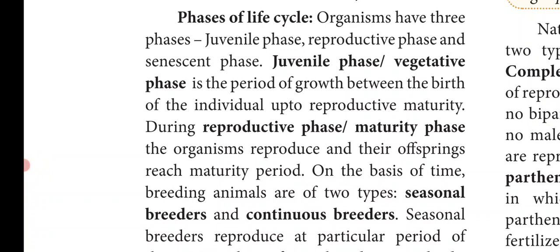In animals, the juvenile phase is the period of growth between the birth of the individual up to reproductive maturity. It is a period between birth and reproductive maturity. Juvenile means young ones, so it is the younger phase.